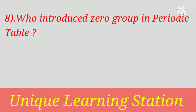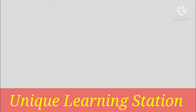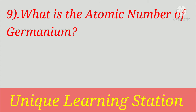Who introduced the zero group in the periodic table? Answer: William Ramsay. What is the atomic number of germanium? Answer: 32.